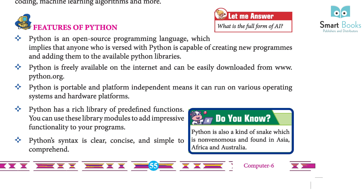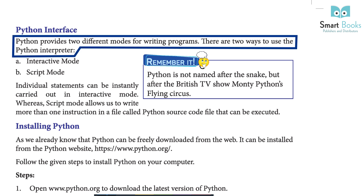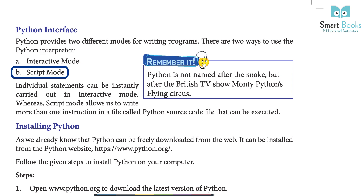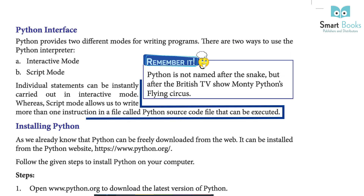Did you know? Python is also a kind of snake, which is non-venomous and found in Asia, Africa, and Australia. Python provides two different modes for writing programs: interactive mode and script mode. Remember: Python is not named after the snake, but after the British TV show Monty Python's Flying Circus. Individual statements can be instantly carried out in interactive mode, whereas script mode allows us to write more than one instruction in a file called a Python Source Code file that can be executed.